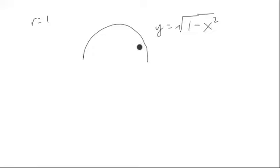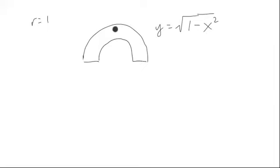We can do this as a limiting process of finding the center of mass of an archway as this arch gets thinner and thinner, and the limit of that gives us our answer. The other way of doing it is to actually work through the rigmarole of what's going on. Let's remind ourselves what's happening with that rigmarole.